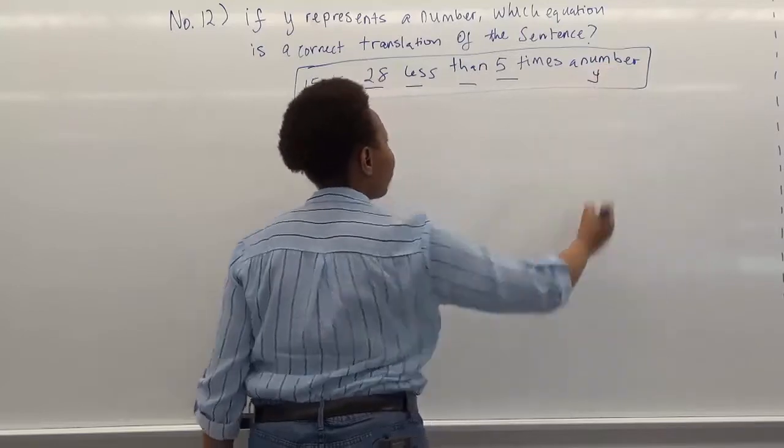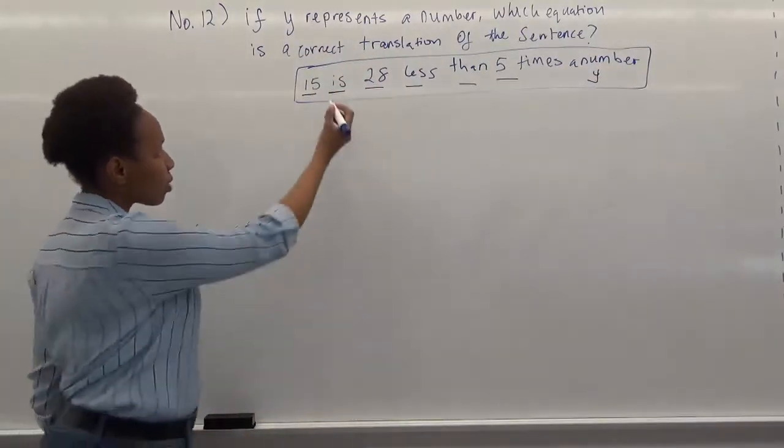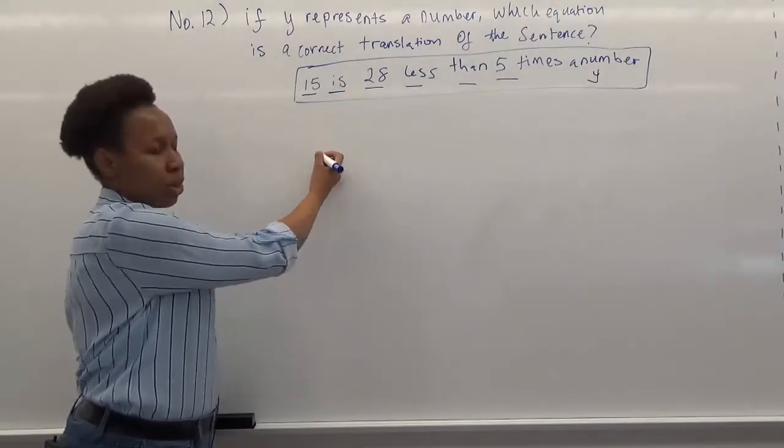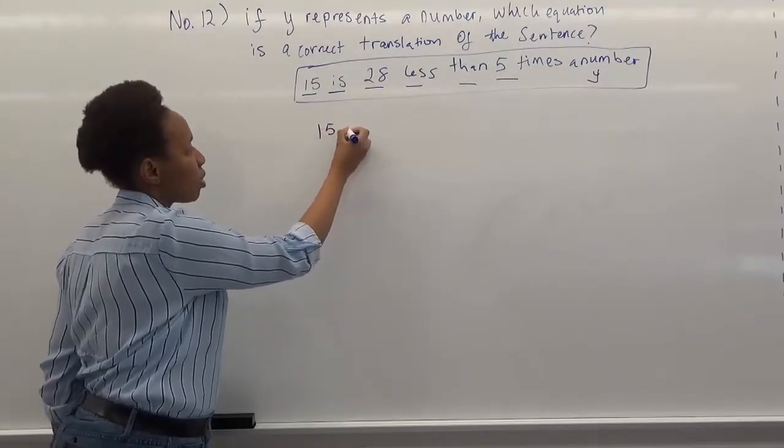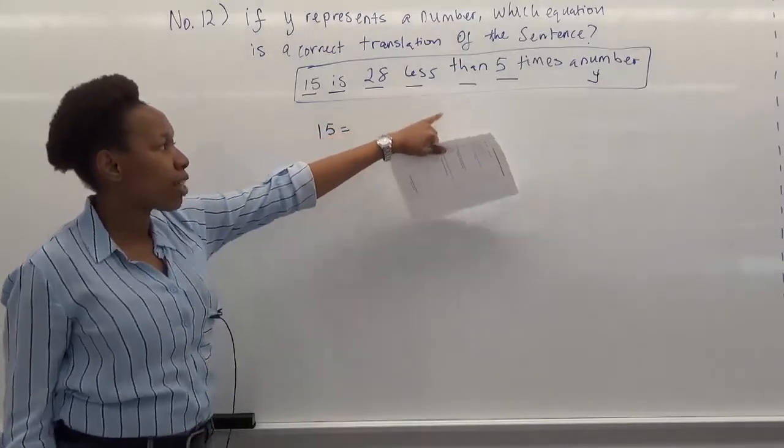So this number is y, because y represents a number. So now, 15 is, if we translate this into an equation, we have 15 is equal to 28 less than 5 times a number.